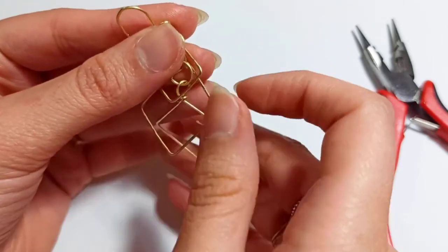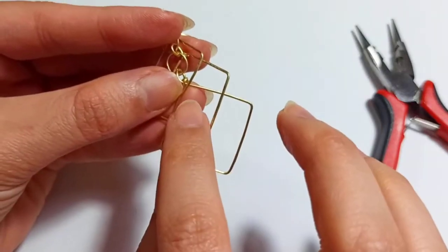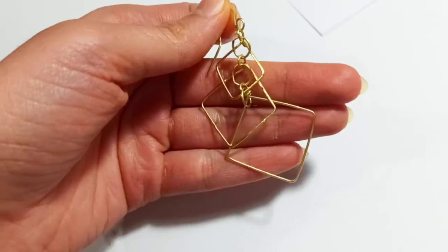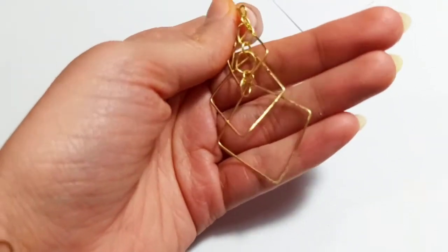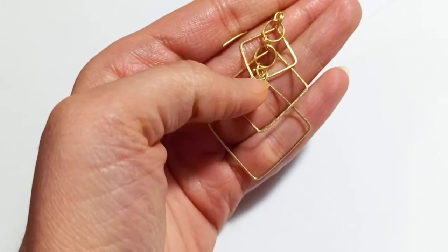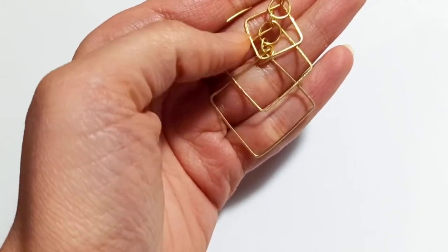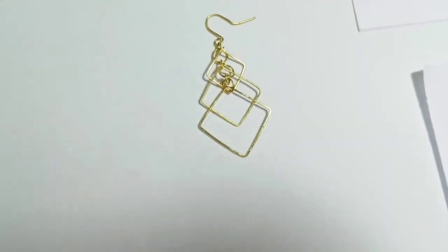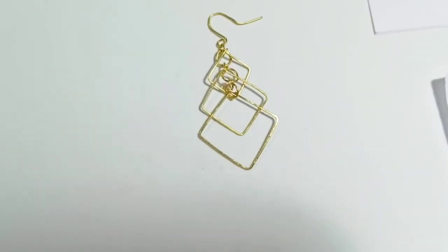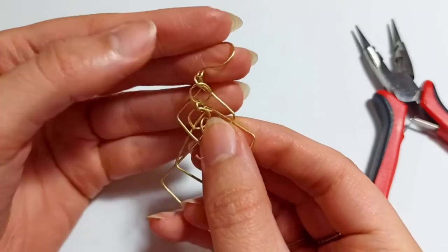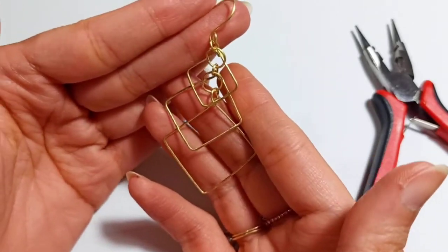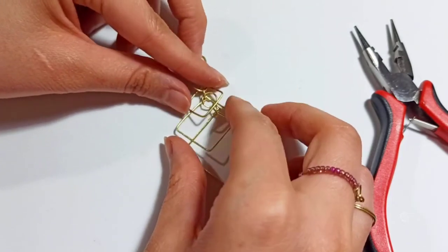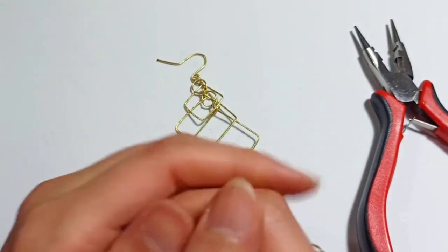You can also fix the little square to the bigger one by inserting another jump ring in the place where the smallest square joins the biggest—this would be the result. Or just leave it free. Hope you enjoyed this tutorial. Make one and enjoy it. Thanks for watching, take care, and bye bye.